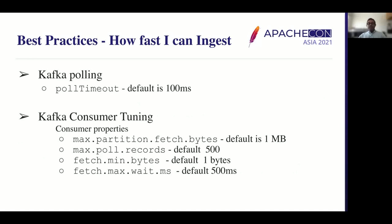A common question from Druid users is: how fast can I ingest data from Kafka? Druid polls the Kafka partition at frequent intervals to get data. By default, this poll interval is 100 milliseconds. You can configure this by setting the poll timeout in the supervisor spec. This means once data is available in Kafka, it can arrive in Druid and be queryable within approximately 100 milliseconds.